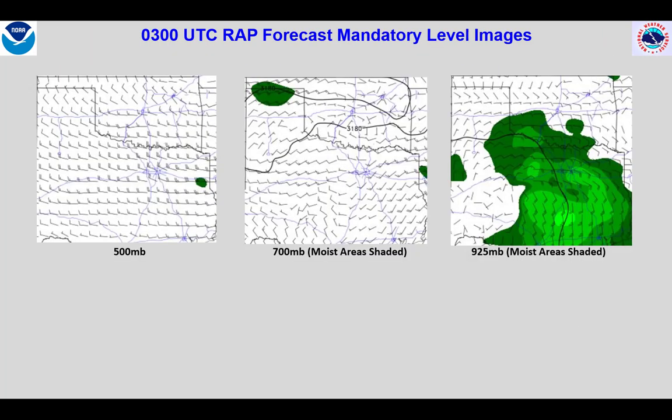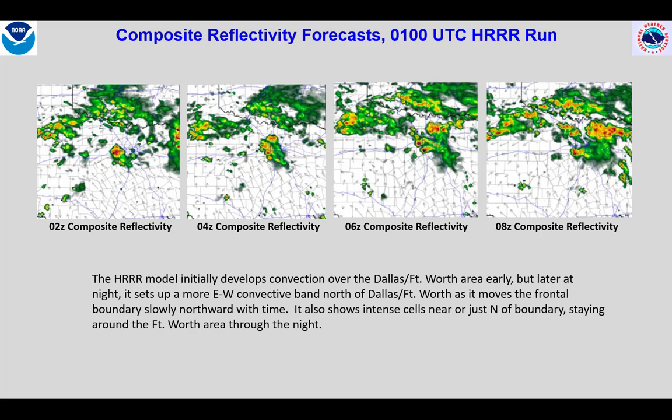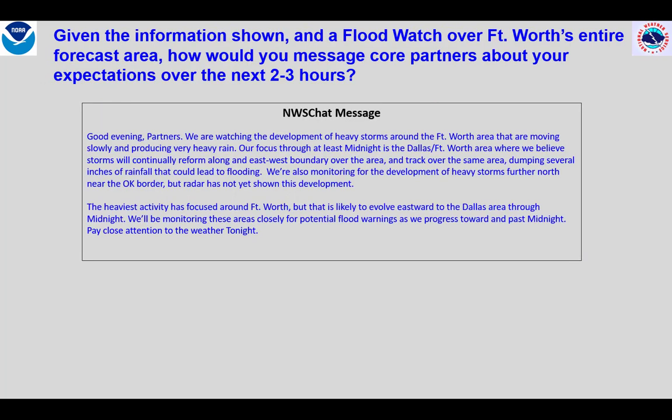At 3Z, the RAP shows a 700 millibar shortwave trough approaching the Dallas-Fort Worth area, while convergence and lift of moist air at 925 millibars continues across northern Texas. The HER has been consistently forecasting a slow-moving east-to-west band of heavy convection over far northern Texas, seemingly in line with the 850 millibar front. However, the 1Z HER run also shows convection further south around the Dallas-Fort Worth area, redeveloping over this area for several hours. Despite the HER indicating heavy rainfall potential further north, I'm not messaging that given the lack of convection in that area on satellite and radar imagery. My focus continues to be the Dallas-Fort Worth area, given radar and satellite trends and the favorable environment for excessive rainfall.